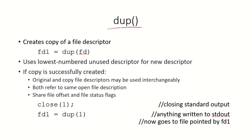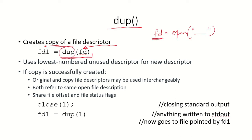Dup is another system call — you can think of it as short for duplicate. This creates a copy of the file descriptor. If we use this system call on an existing file descriptor FD, which is already referring to a file opened earlier, we can duplicate it. You can check my earlier video to see how file descriptors are maintained in the file descriptor table. The new file descriptor FD1 will be the lowest numbered unused descriptor in the file descriptor table.